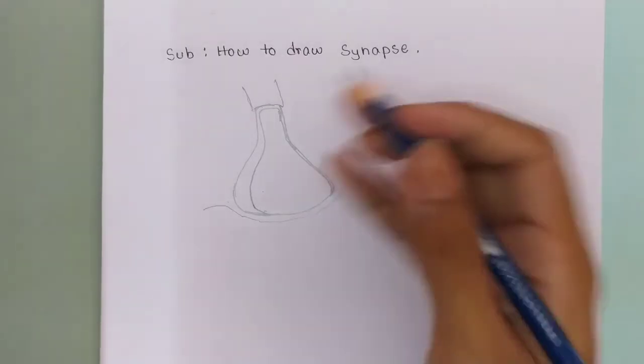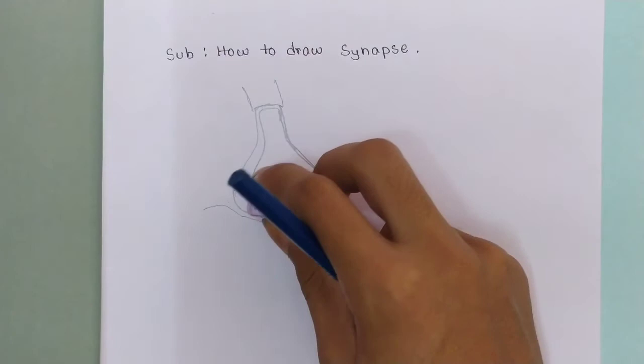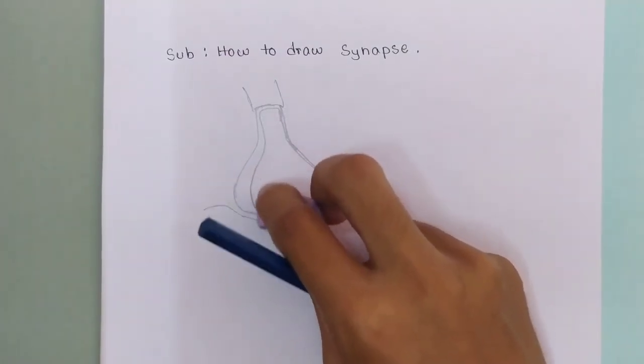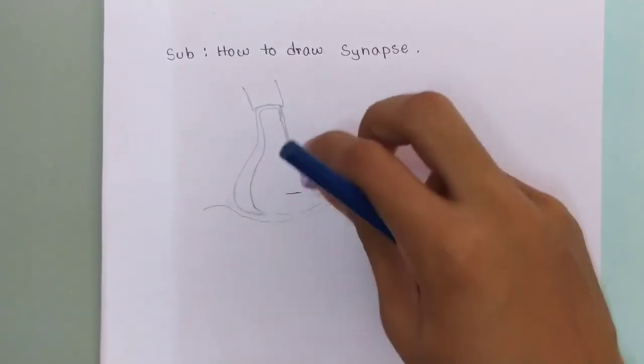And then guys we will draw the next part, means the part of dendron in this way. Now guys we will erase some parts from the axon ending. This is the ending part of the axon.